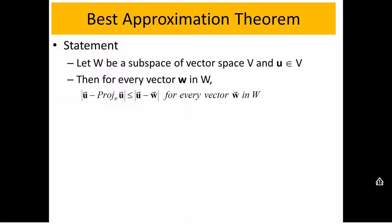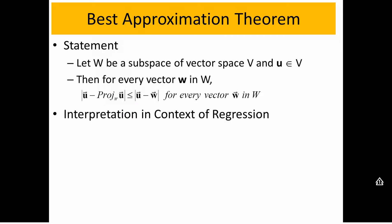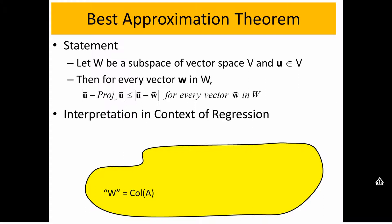Before we get into the proof, let me show you what this is actually saying. In the context of regression, we have the column space of A — some subspace. And this is our B vector, that's what we're calling U in the statement. We're going to project B onto the column space, and we're going to claim that this projection is the closest vector in W to B.